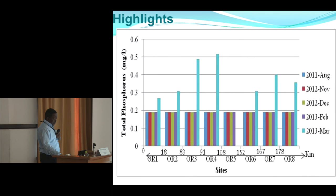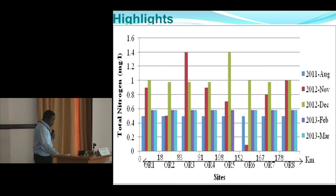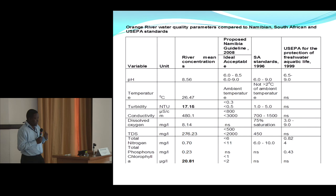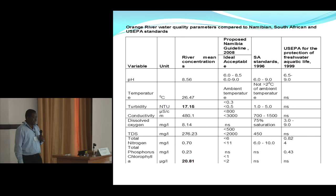Additional parameters measured included total dissolved solids, dissolved oxygen, total phosphorus, total nitrogen, and chlorophyll A. A summary slide shows whether values are within or outside standards. We used three standards: Namibia's water quality guidelines, South African standards, and US EPA standards. Only two parameters exceeded standards: turbidity and chlorophyll A; the rest were within standards.